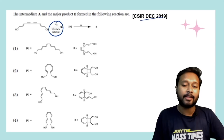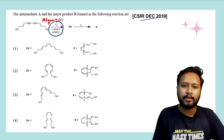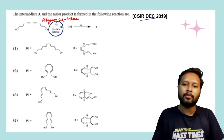You should know that H₂ with Lindlar catalyst reduces an alkyne to an alkene and forms a cis alkene. That's the main function of H₂ with Lindlar catalyst — it converts your alkyne into a cis alkene.